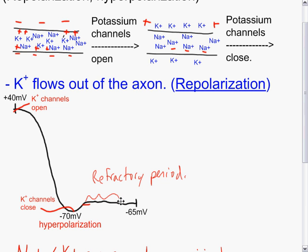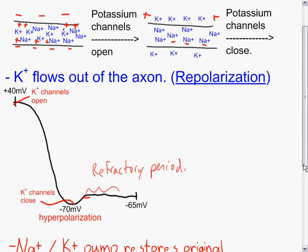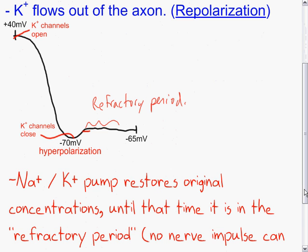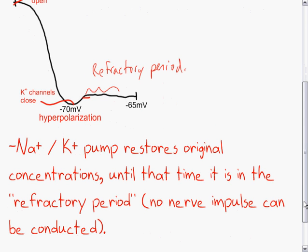As the sodium potassium pump continues to fix the concentrations, this will bring it back up to minus 65. And then once the sodium potassium pump has put sodium back on the outside and potassium back on the inside, then the refractory period will be over. So the sodium potassium pump restores original concentration. Until that time, it is in the refractory period. No nerve impulse can be conducted in the refractory period.